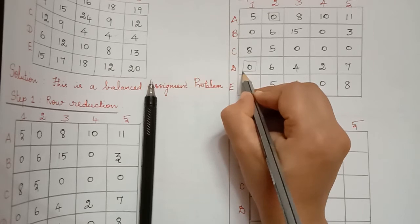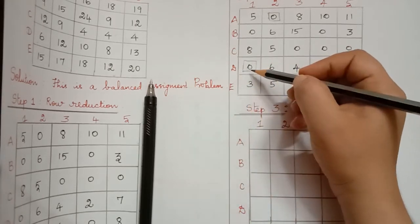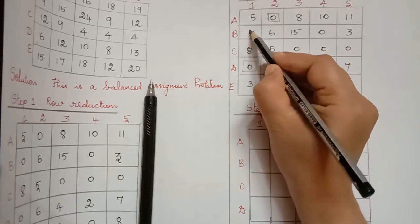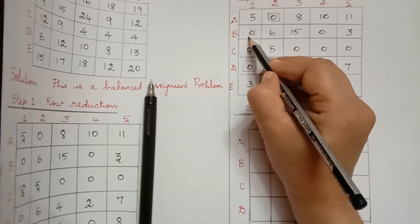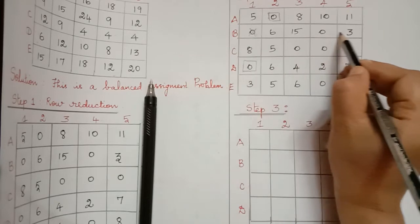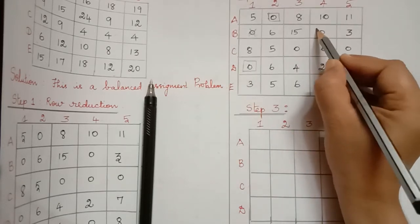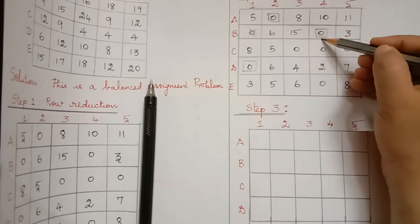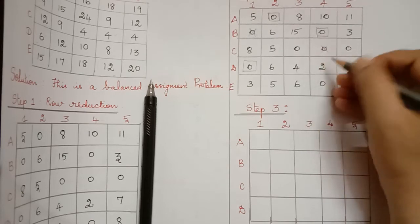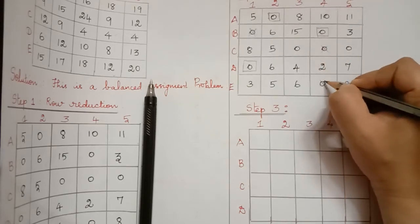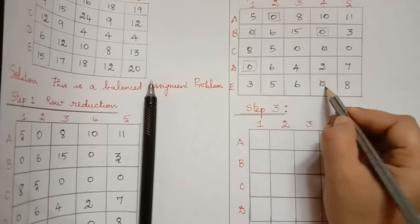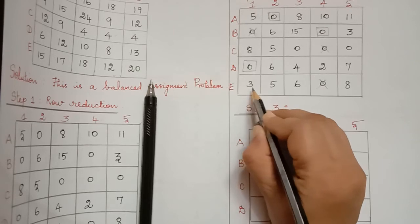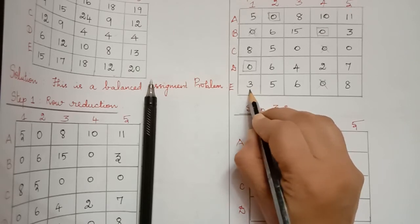We select the zero in row 4 and strike off any zeros in the corresponding column. We find a zero there and strike it off. After striking it off, we find the only zero available for that row is another zero, so we select it. When we select this zero we strike off the corresponding zeros in that column — two zeros are struck off. After striking these off, there are no zeros available for the fifth row, so we must proceed by drawing the minimum number of lines to cover all zeros.